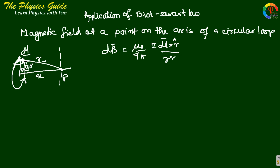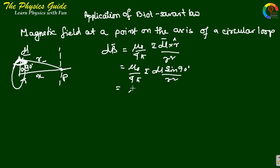Let radius equals A. We can see from the figure that dL and R have an angle of 90 degrees, because the axis is perpendicular to the loop, so R is also perpendicular to the ring. So dB converts to mu naught by 4 pi times I dL sine 90 by R squared, which gives mu naught by 4 pi times I dL by R squared.